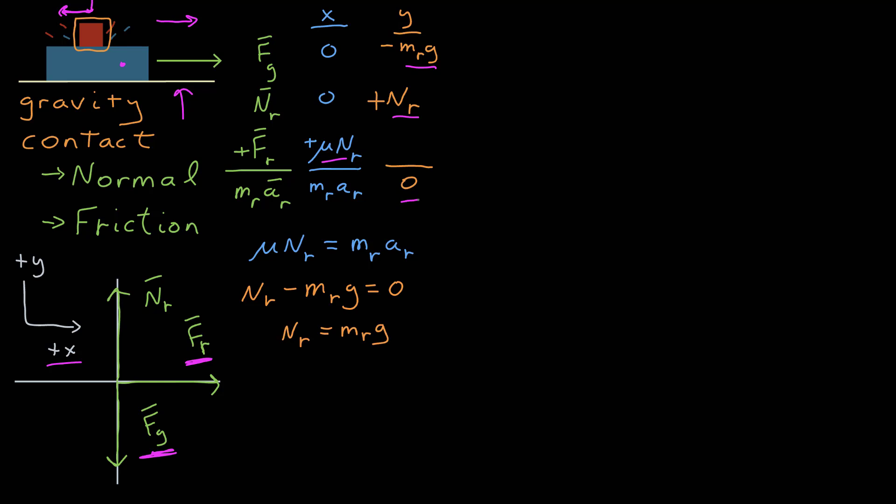From the y equation, the magnitude of the normal force of blue on red is equal to the mass of red times the acceleration due to gravity. Substituting that in, I find the acceleration for the red block is the coefficient of friction times g. This makes sense — the coefficient of friction is dimensionless, so at least the units of this expression are right.